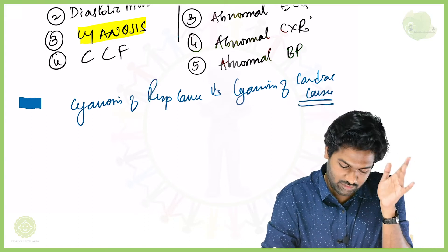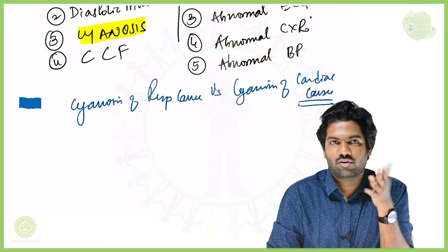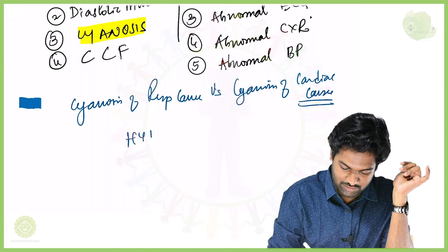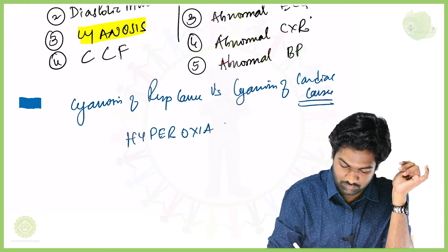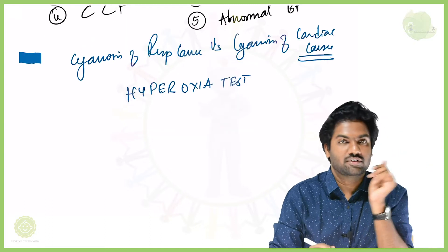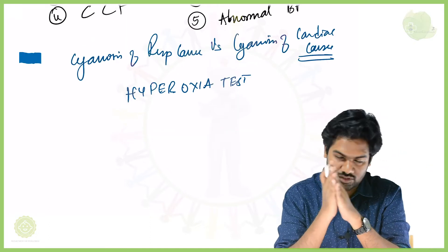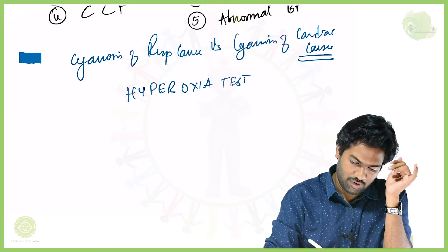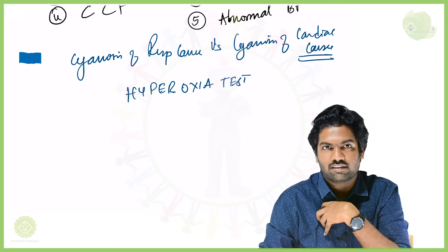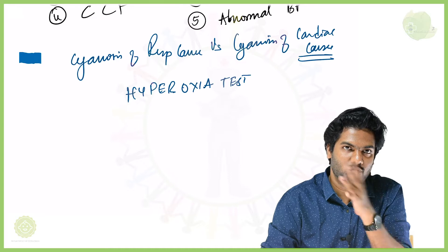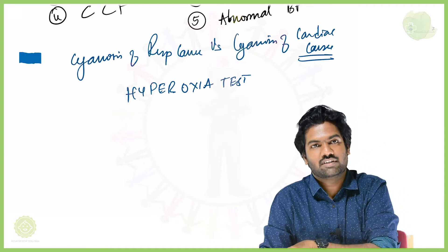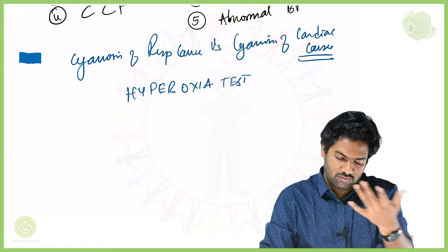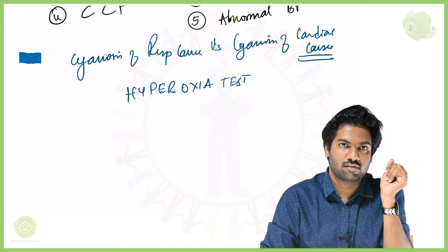After NADA's criteria, one way to confirm is by the hyperoxia test. In a baby with a respiratory problem like pneumonia, the moment you start giving oxygen there is improvement in oxygenation — the baby will start responding to higher oxygenation. That's how we get to know it is a respiratory cause.